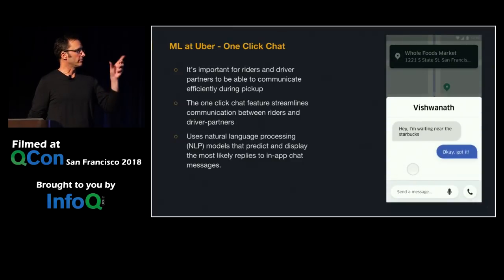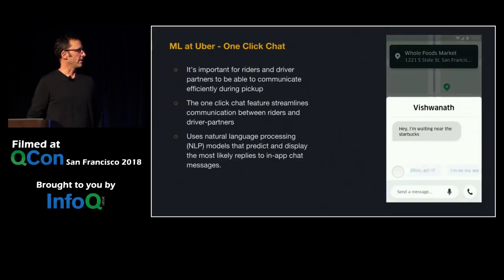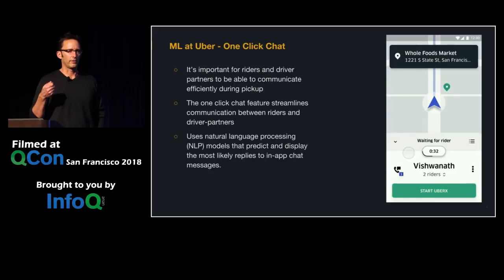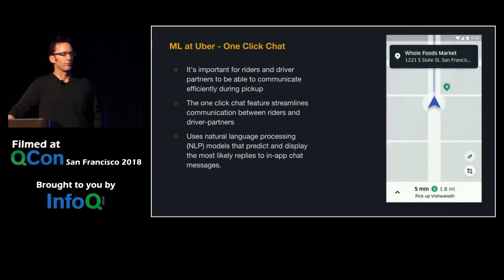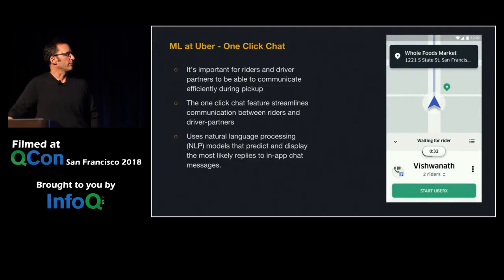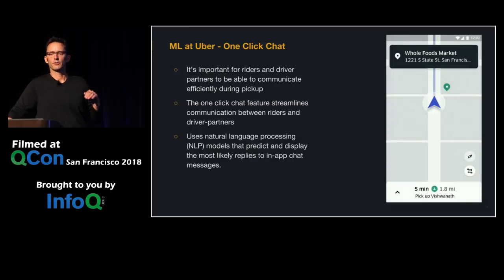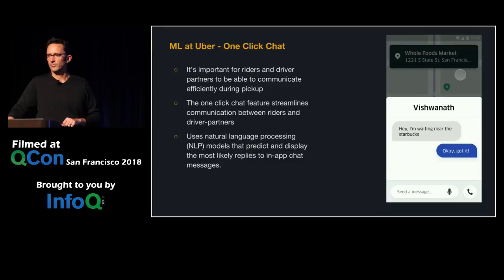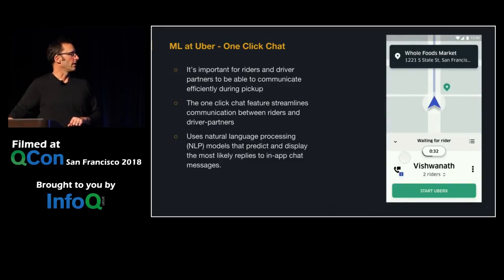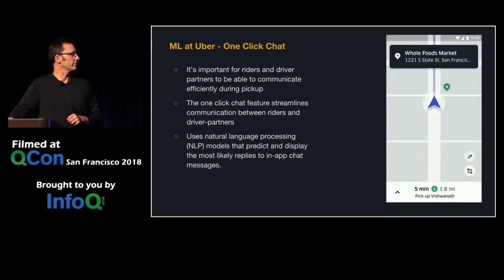Another similar application is the one-click chat feature we released recently. When a car is coming to pick you up, you often want to communicate with the driver about exactly where you're standing or if you're running. We have an NLP model that predicts the likely next response in a conversation, so you can communicate with the driver by just picking responses from a menu instead of typing. The accuracy rate is quite high and you can carry on pretty good conversations without typing any text.